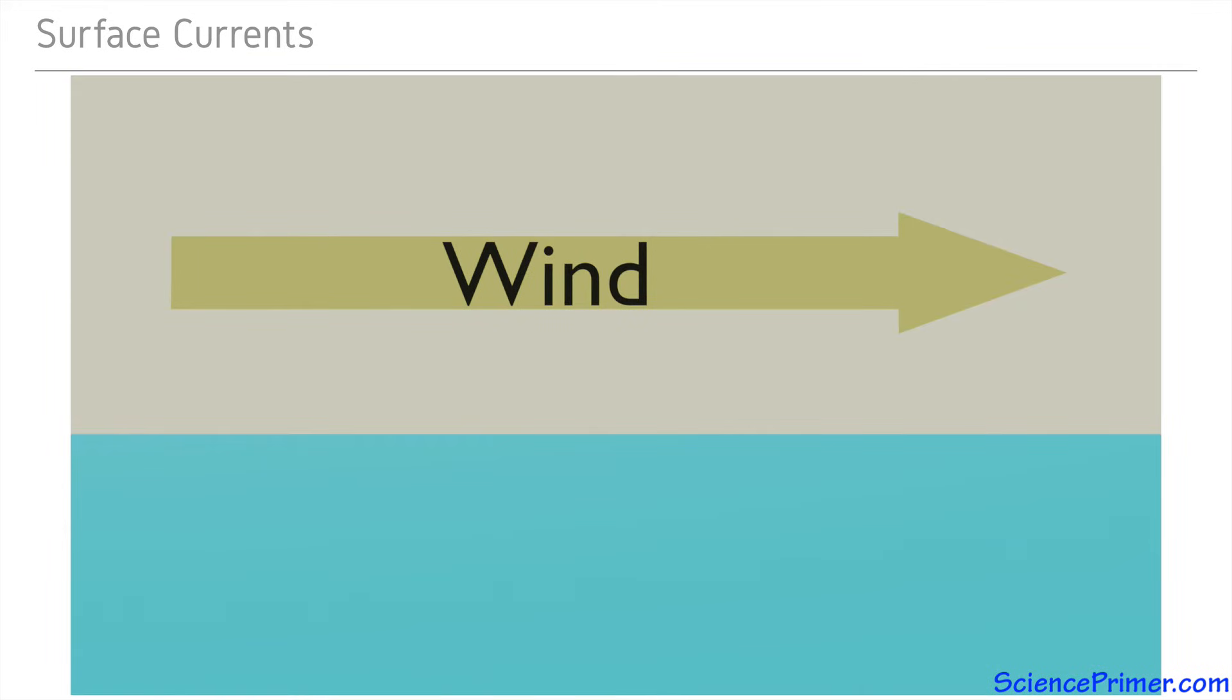As wind moves across the surface of the ocean, friction between the moving air and the surface of the water causes the water to begin to move as well. This transfer of energy through friction is how wind causes surface currents.